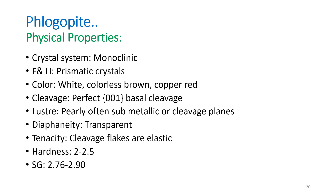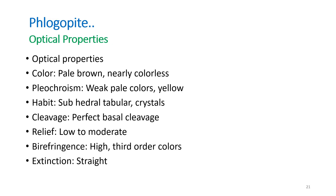Phlogopite: crystal system monoclinic; habit prismatic crystals. Color: white, colorless, brown, or sometimes copper-red. Cleavage: perfect basal cleavage (001); luster: pearly to sub-metallic; transparent mineral; tenacity — cleavage flakes are flexible and elastic; hardness 2 to 2.5; specific gravity 2.76 to 2.9.